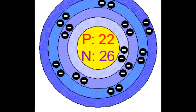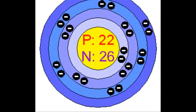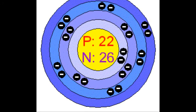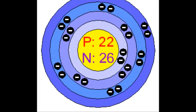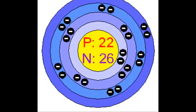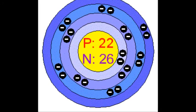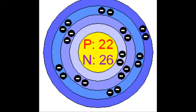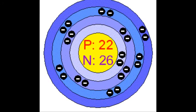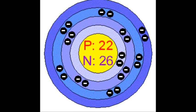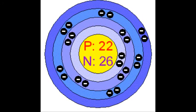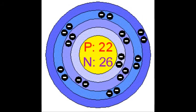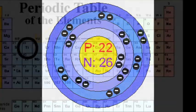Next we have the Bohr-Rutherford diagram of titanium. In this image we can tell that it has 22 protons and 26 neutrons. It has 4 shells with 2 electrons in its first shell, 8 in its second, 10 in its third, and 2 in its outer valence shell for a total of 22 electrons.